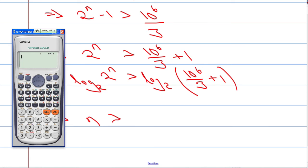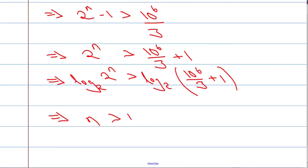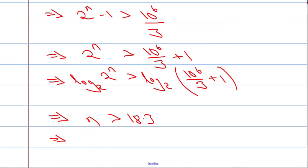So n is going to be greater than whatever value we get from log base 2 of (10 to the power of 6 over 3, plus 1). The calculator gives us approximately 18.3. That implies it's the 19th value — after 19 values we exceed 1 million. When we add the first 19 values, we're going to exceed the 1 million mark.